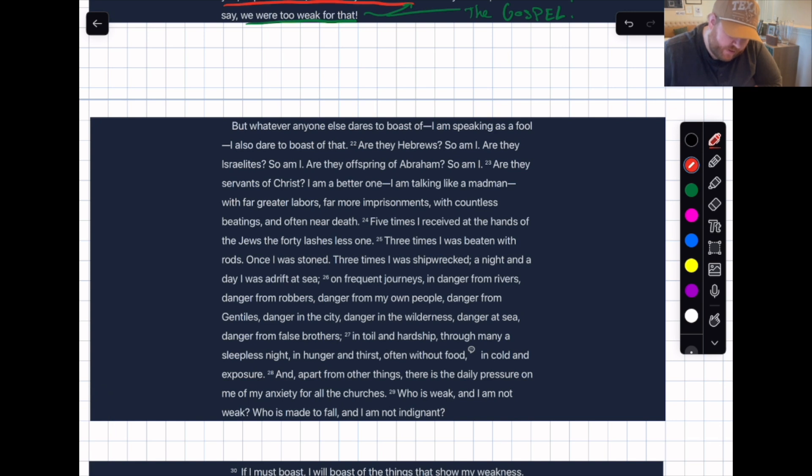But whatever anyone else dares to boast of—I am speaking as a fool—I also dare to boast of that. Are they Hebrews? So am I. This is a big passage. Are they Hebrews? So am I. Are they Israelites? So am I. Are they offspring of Abraham? So am I. Are they servants of Christ? I'm a better one. I'm talking like a madman. I like this—I am talking like a madman. Boom. Please understand I'm pushing the edges here.